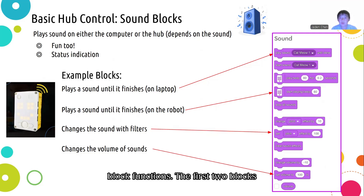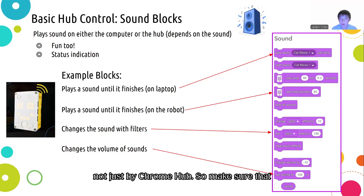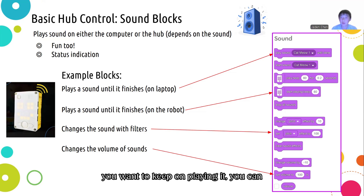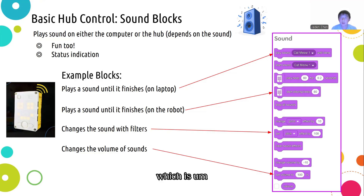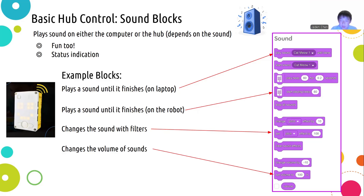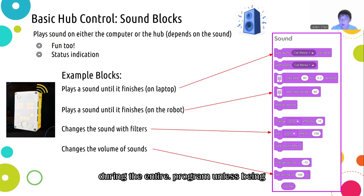Here are some of the block functions. The first two blocks will play a sound that you can select in the menu, and note that these sounds will play on your laptop, not your Spike Prime hub, so make sure your sound is up. The difference between them is that the first block plays the sound once, while the second block keeps playing it. After that, there is a beep block that runs on your Spike Prime hub, where you can change the frequency as well as how long it will be played. There are also filter blocks like the pitch effect that you can change to modify all the sounds, and these effects will stay during the entire program unless changed later on.